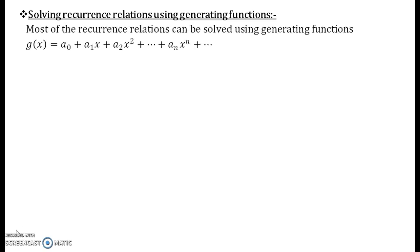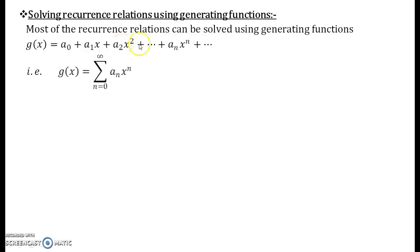First of all let us see what is a generating function. It looks in this format: g of x is equals to a0 plus a1*x plus a2*x to the power 2 plus so on, a_n*x to the power n, and so on. There are infinite number of terms. You can compactly write this as g of x equals summation a_n * x to the power n, where n goes from 0 to infinity.